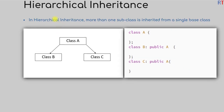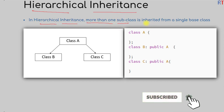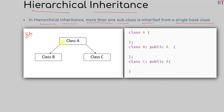In this video we're going to talk about hierarchical inheritance in C++ programming. In hierarchical inheritance, more than one subclass is inherited from a single base class. For example, we have one single base class, class A, and class A is inherited by class B and class C — so we have one parent class and more than one child class. That's why it is called hierarchical inheritance.